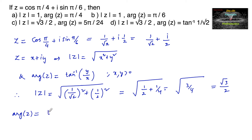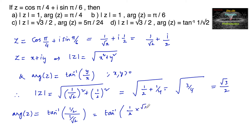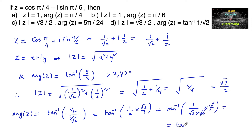Argument of z: since x and y are both positive, we write tan⁻¹(y/x). Here y = 1/2 and x = 1/√2, so argument = tan⁻¹((1/2) ÷ (1/√2)) = tan⁻¹(1/2 · √2) = tan⁻¹(√2/2) = tan⁻¹(1/√2). So argument of z = tan⁻¹(1/√2).